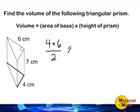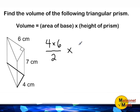After we figure out what that area is, we are going to multiply it by the height of our prism, which is 7 cm.